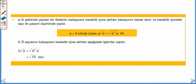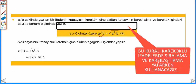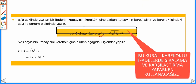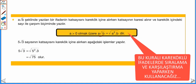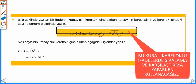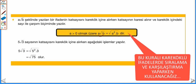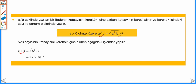Bir diğer kuralla devam edelim. A√B şeklinde yazılan bir ifadenin kat sayısını kare kök içine alırken, kat sayının karesi alınır ve kare kök içindeki sayıyla çarpım biçiminde yazılır. Yani A√B ifadesinde a'yı kökün içine alırken a'nın karesi alınır, √(a² · b) olarak yazılır. Örneğin 5√3 sayısında 5'i kökün içine aldığımızda, 5² = 25; 25 × 3 = 75; yani 5√3 = √75'e eşit olarak bulunur.